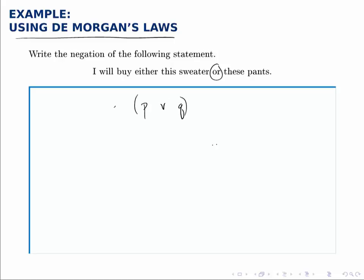And we want the negation of that whole statement. The appropriate De Morgan's Law says you negate both pieces, change the or to an and, so not P and not Q.